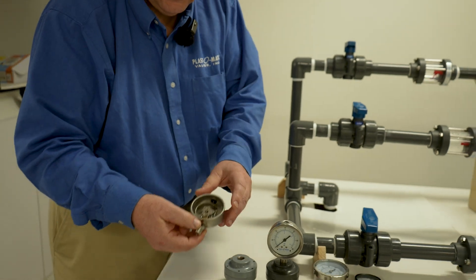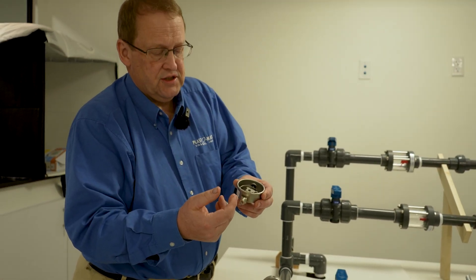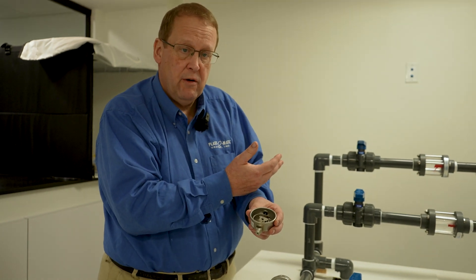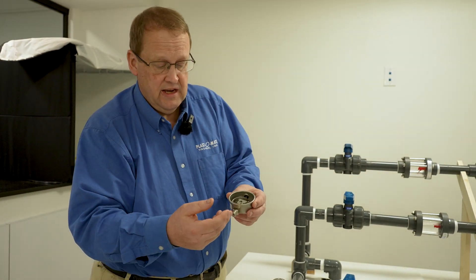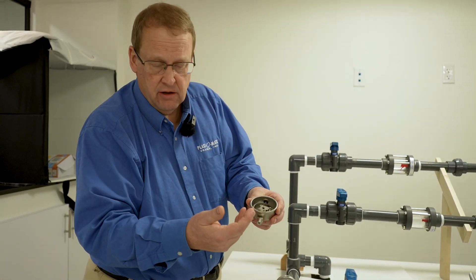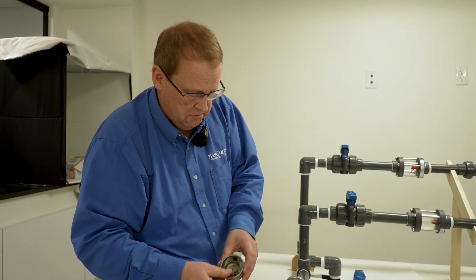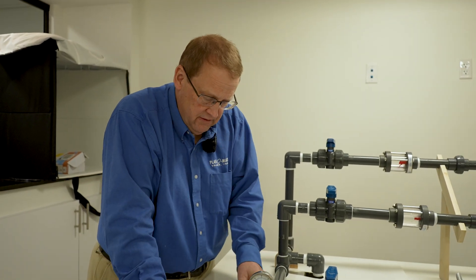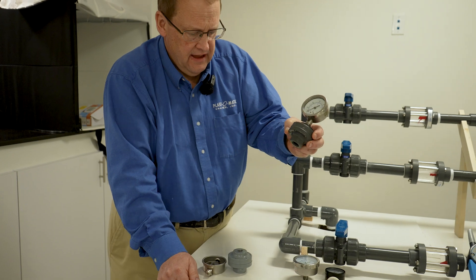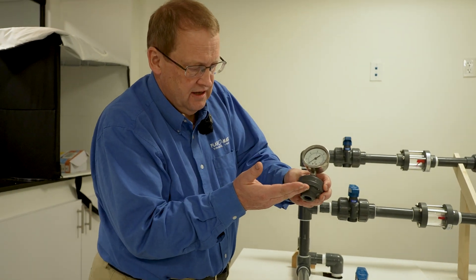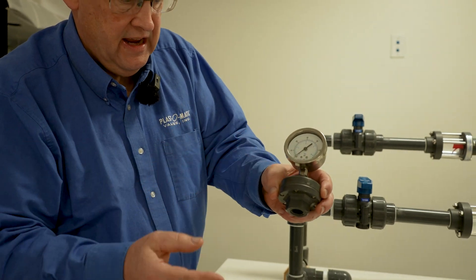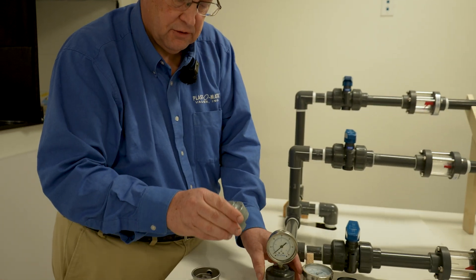As you can see it's all metal here. So what we've got is the gauge guard and that separates the process liquid from the liquid in the gauge.